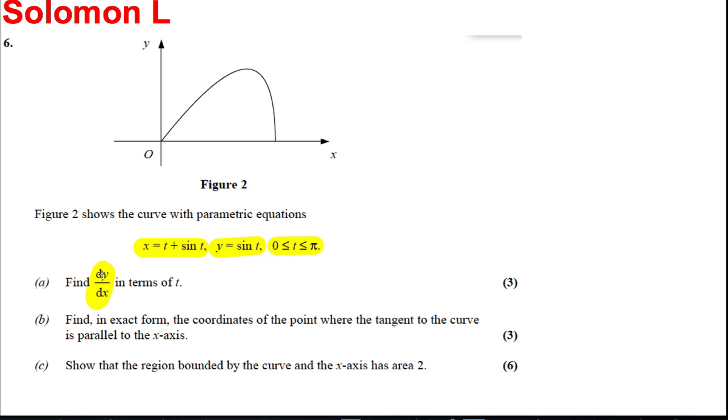Part A, nice and easy, work out dy over dx in terms of t. Part B, find in exact form the coordinates where the tangent to the curve is parallel to the x-axis. Well, what does that mean? To be parallel to the x-axis, the tangent must be a horizontal line. And therefore, they are basically looking for this point here, the maximum. So they're looking for the maximum and that's at dy by dx is equal to 0. So that's what we're going to use for part B.